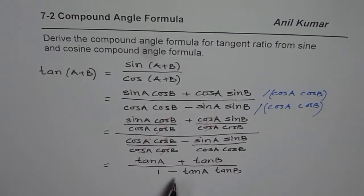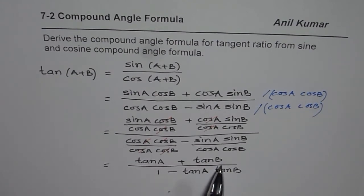So, we get our formula for tan of A plus B equals to tan A plus tan B, divided by 1 minus tan A tan B. You get the idea.